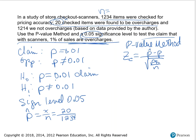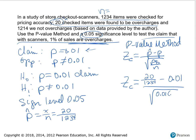The calculated test statistic is z sub c equals p-hat minus p, divided by the square root of pq over n. We know p equals 0.01, so q equals 0.99. Therefore z sub c equals (20/1234 minus 0.01) divided by the square root of (0.01 times 0.99 divided by 1,234). After calculation, z sub c equals 2.19.